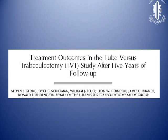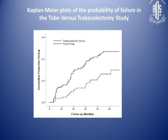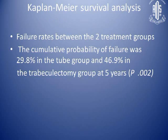What does the TVT study say after 5 years? This is the result of the Kaplan-Meier plot, which shows the failure rates in the trabeculectomy and tube groups. After comparing these two groups, they found that the probability of failure was 29.8% in the tube group, which is significantly lower than in the trabeculectomy group.